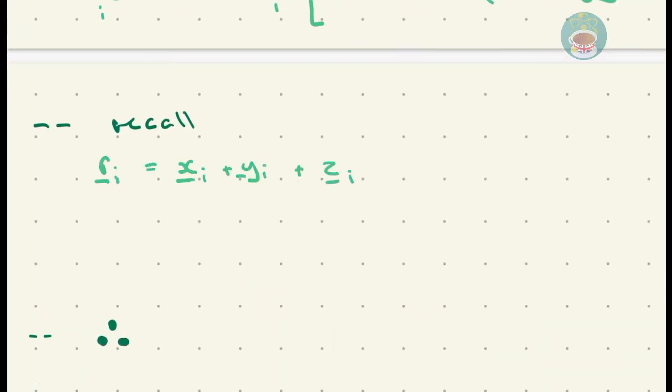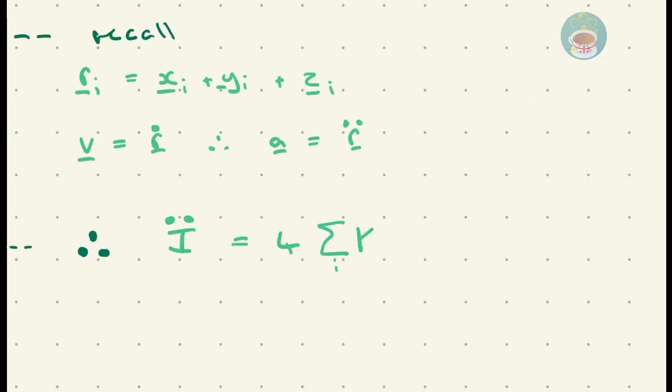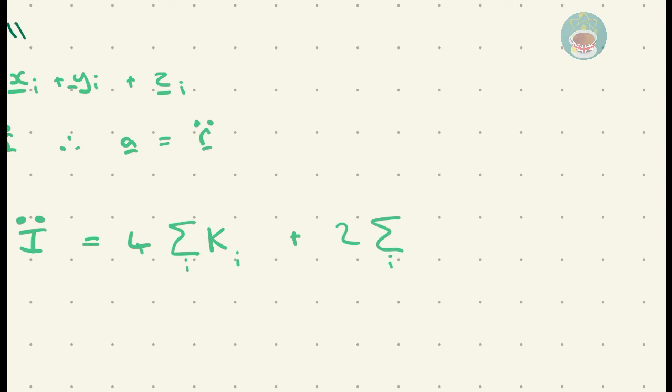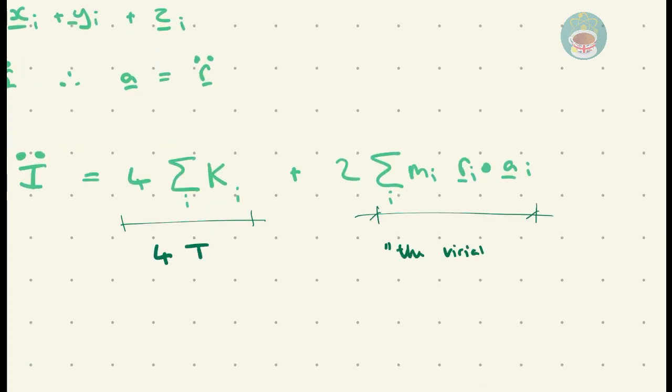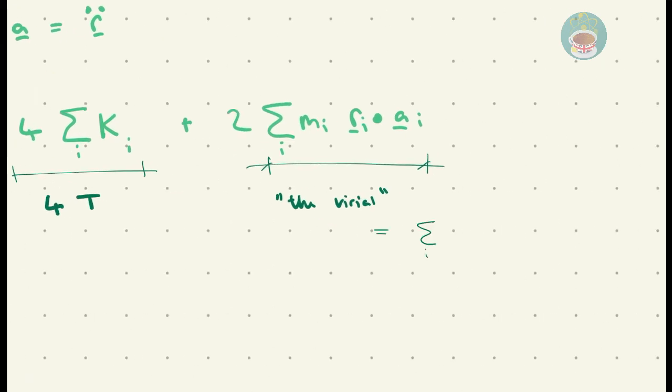By recalling our earlier definition of the vector form r, we can rewrite the moment of inertia equation, where the first term equals 4 times the total system kinetic energy, T, and the second term is 2 times something called the virial, which also equals the summation of Fi Ri dot products.